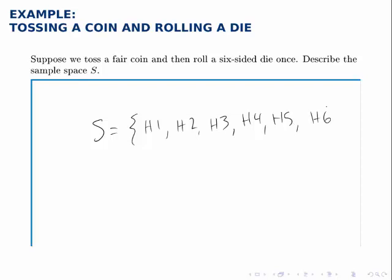And then the coin could come up tails, and the die could be either one, two, three, four, five, or six. So we have six more possibilities with the coin coming up tails. And that is the full list of all the possibilities that could occur with this experiment.